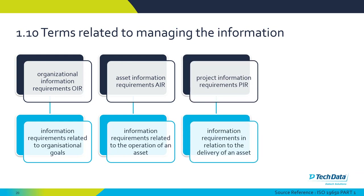Project Information Requirements, or PIR, relate to the construction and design stage of the asset — what information is needed for the contractor on site to actually install an air handling unit or lay a particular tile finish. This includes manufacturer information, specification information, and even where to source the materials.